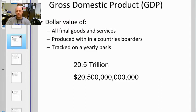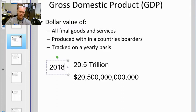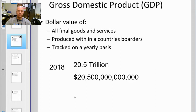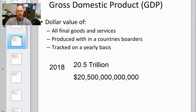GDP is the dollar value of all final goods and services that are produced within a country's borders, tracked on a yearly basis. A student googled it and found that as of 2018, the U.S. Gross Domestic Product was $20.5 trillion — that's 20 with a whole boatload of zeros. We found a way to add up every single economic transaction that happened. We'll dig into what it is, what it isn't, and how well that represents what we did in 2018.